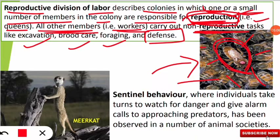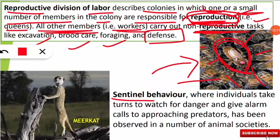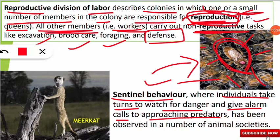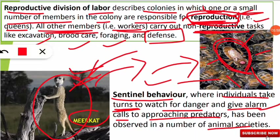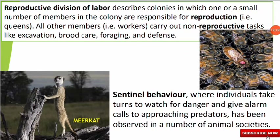The final cooperative behavior is sentinel behavior — not related to remote sensing satellites, but a behavior in animals where individuals take turns to watch for danger and give alarm calls upon approaching predators. For example, in meerkats, one individual stands like a soldier watching for any predator approaching their colony, giving an alarm if one is spotted. This behavior is also seen in many bird societies. When that sentinel is tired or needs to rest, another individual takes its turn to guard, making it a cooperative, turn-based behavior.